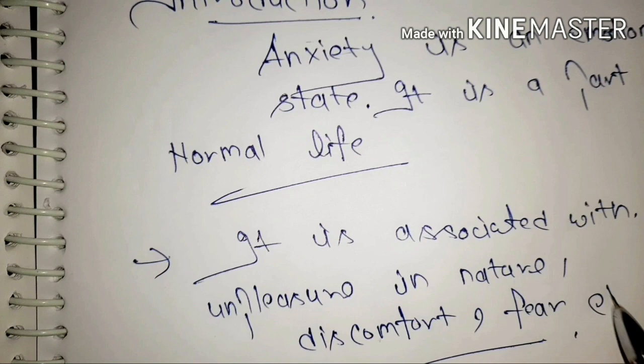Anti-anxiety drugs are the drugs that treat anxiety. They are called anti-anxiety drugs. The drug which is used in the treatment of anxiety is called an anti-anxiety drug. Conditions where you feel unpleasant, discomfort, fear, or unconsciousness — all those problems relate to anxiety, which is a normal part of being human.